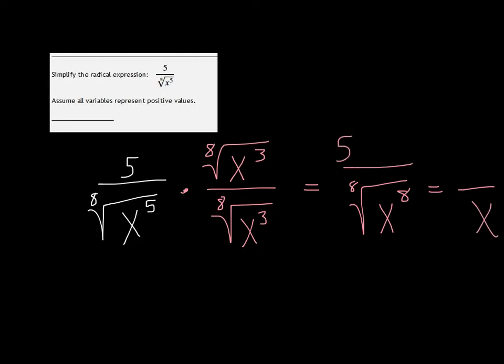And in the top, we just combine them, we get 5 times the 8th root of x cubed. So yeah, let me rewrite this. The final answer would be 5 times the 8th root of x to the 3rd power, all over x.